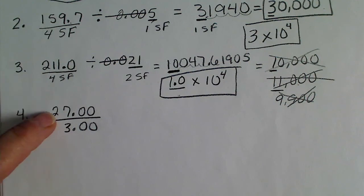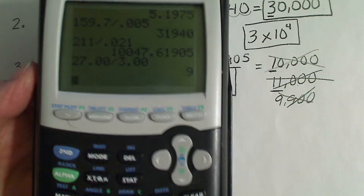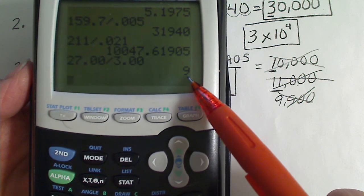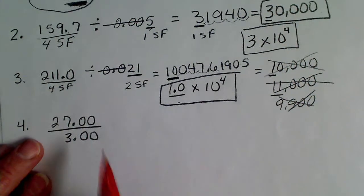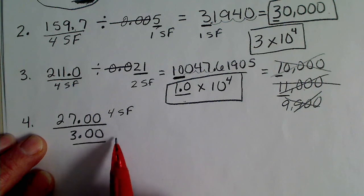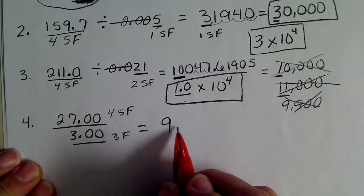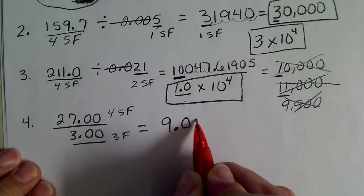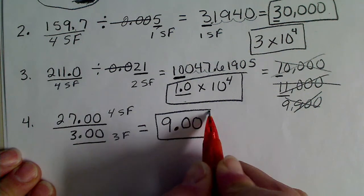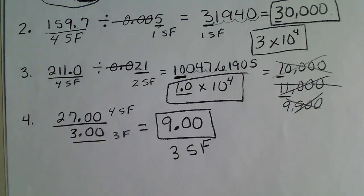In this case, if we take 27.00 and divide it by 3.00 and do that on the calculator, we're only going to get 9. Looking at these values, the top number has four significant figures and our denominator only has three significant figures, so our answer needs three significant figures. Sometimes we have to actually add decimals with zeros in order to get the answer correct — so 9.00 would be the correct way of reporting an answer to three significant figures.